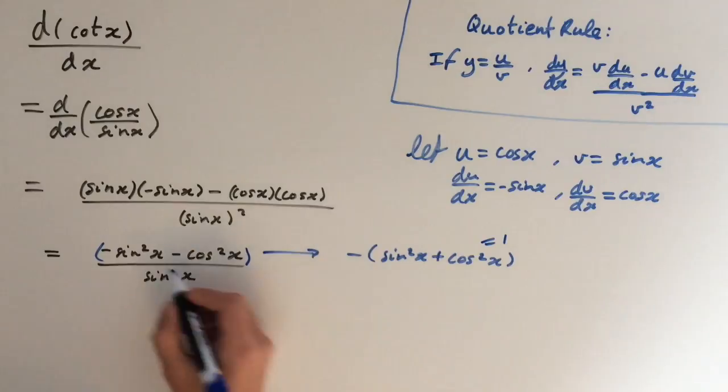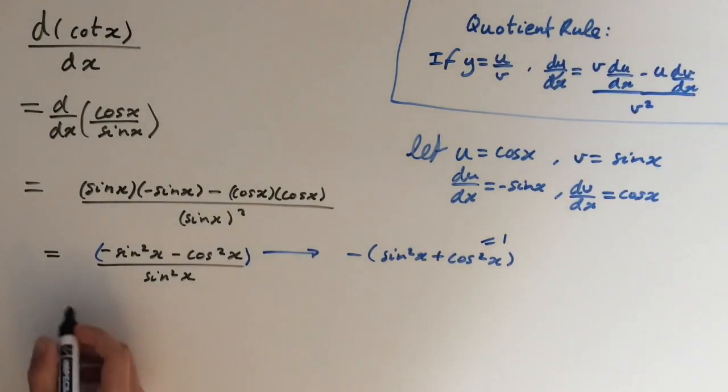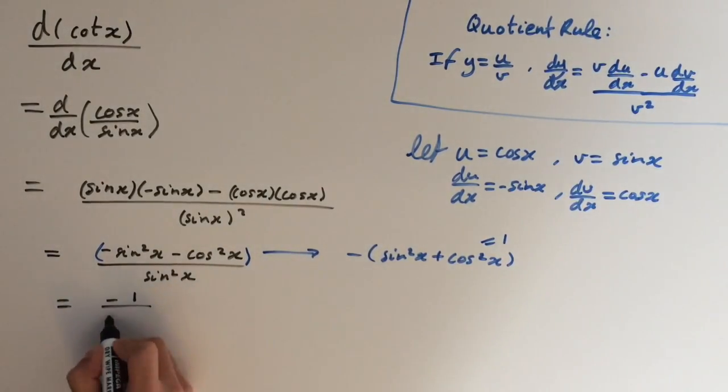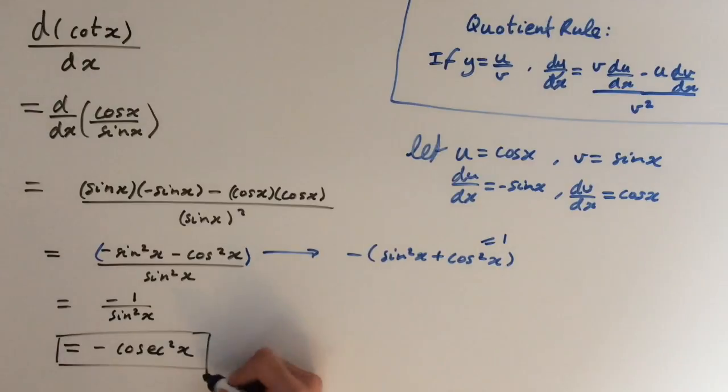So minus 1 is what we get on the numerator over sin squared x. And we can write this as minus cosecant squared x. So there you go, the derivative of cot x.